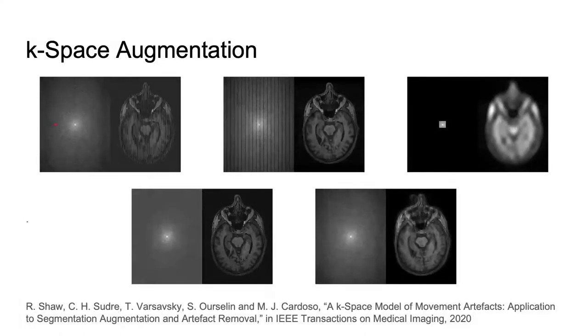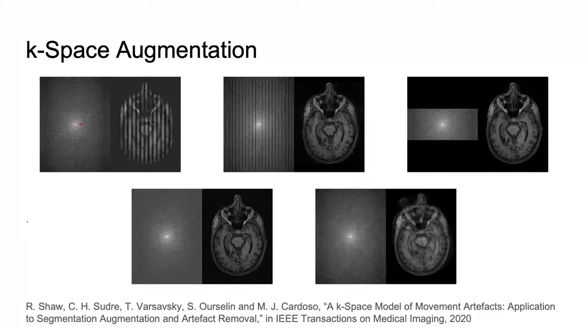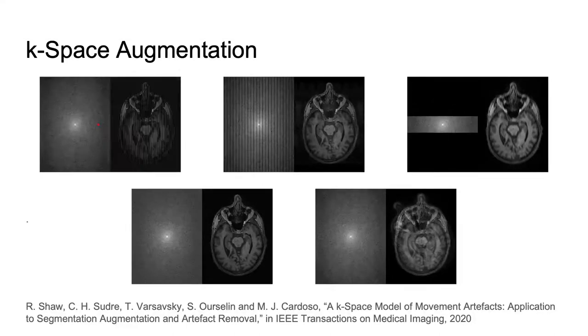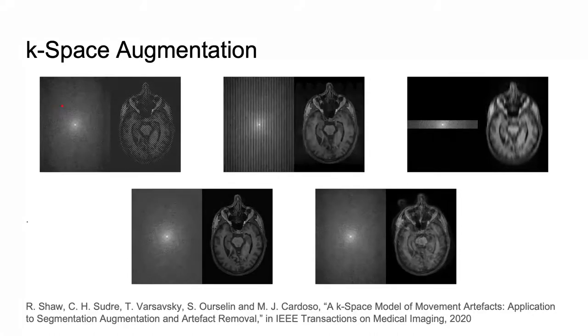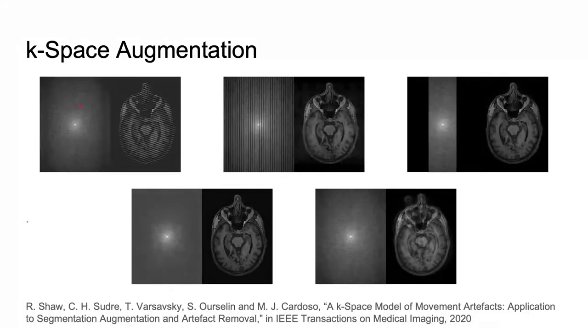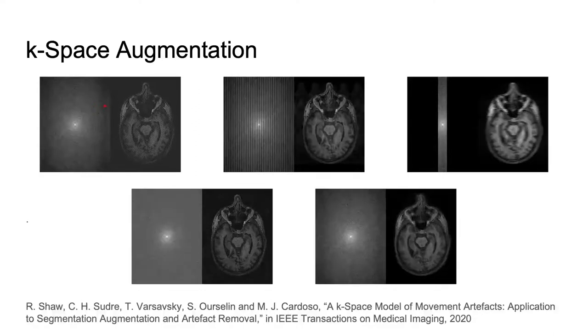To simulate patient movement artifacts, we resample the input image volume using a random sequence of affine transformations and combine their respective Fourier transforms to generate a k-space containing motion. For more information on how we generate motion artifacts, please refer to our paper below.